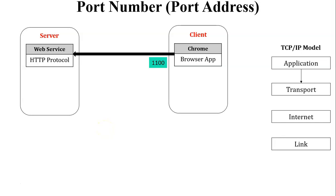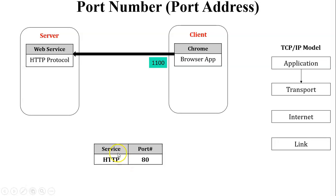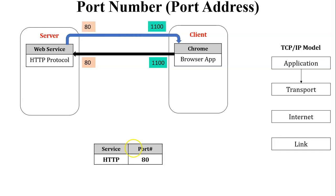The web server checks the client request and determines which protocol is used. Since the request comes from the browser application, HTTP protocol is used and the HTTP protocol port number is 80. So the web server receives this service from port number 80. The web server provides the service to the client from port number 80, and the client receives these services at its registered port number because the browser application uses a registered port number.